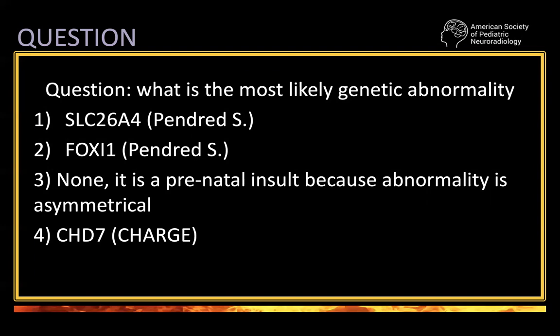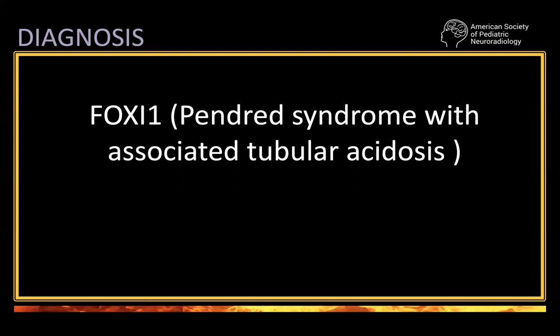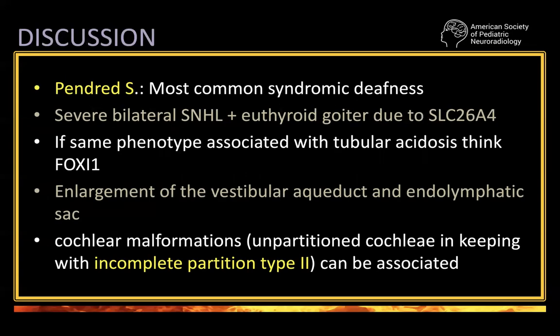Remember the MRI and CT findings and try to figure out what was going on. This is actually Pendred syndrome, but due to the specific gene FOXI1. Pendred syndrome can be associated with goiter — the problem is in the thyroid. But when it's associated with tubular acidosis, the gene is not the famous SLC26A4, but FOXI1. It's the same phenotype, but when associated with tubular acidosis, think FOXI1.